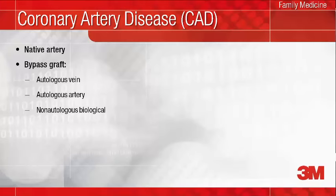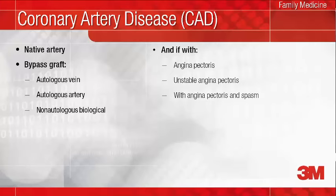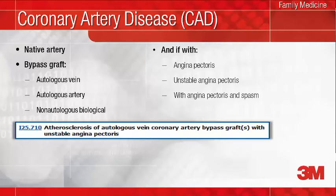What's different in ICD-10? Combination codes are provided for CAD with and without angina. When your patient has CAD with angina, your documentation of angina should include the type, if other than angina pectoris, such as unstable angina or angina with documented spasm. For example, ICD-10 code I25.710 is reported when you document CAD of a saphenous vein coronary artery bypass graft and unstable angina pectoris.